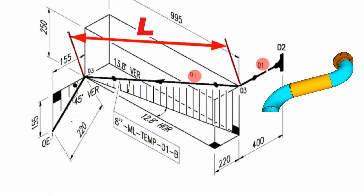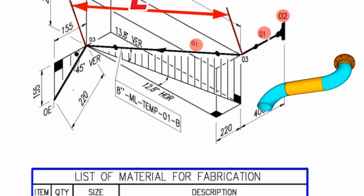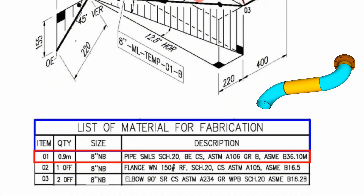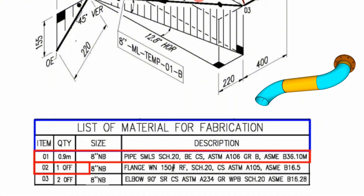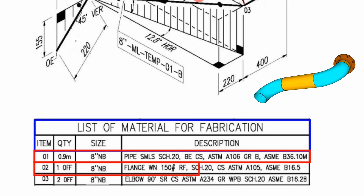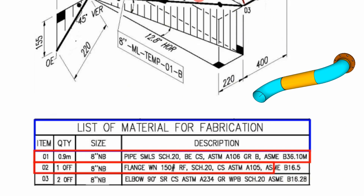Item number 2 has been used in one place of this pipeline. The item number 2 quantities are 2-off, size 8-inch flange, weld neck, 150-class, raised face, schedule 20, carbon steel, ASTM A105, ASME B16.5.